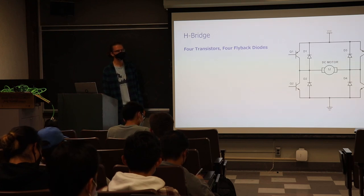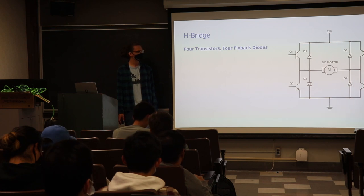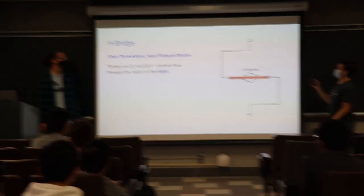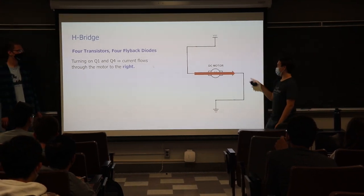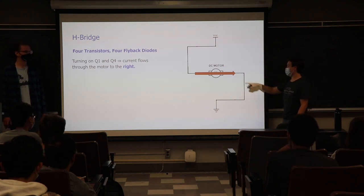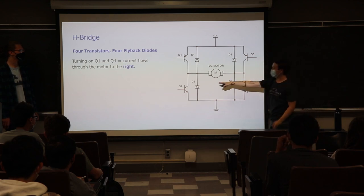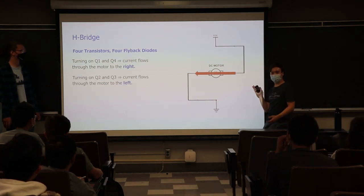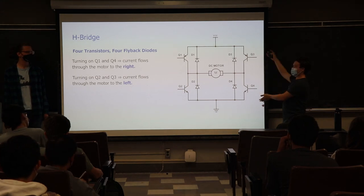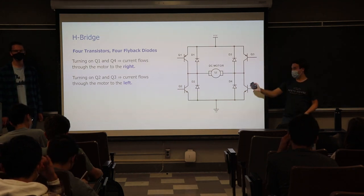Now if we take that transistor-and-diode system and multiply it, we get what's called an H-bridge — named because it looks like an H. We have four transistors and four flyback diodes. When we turn on the top-left and bottom-right transistors — Q1 and Q4 — current flows through the motor in one direction. If instead we turn on Q3 and Q2, the current path reverses and the motor spins in the other direction. That's how we control forward and backward motion.